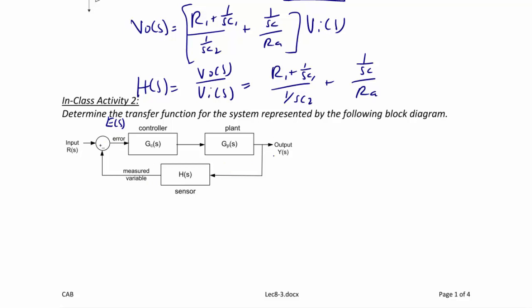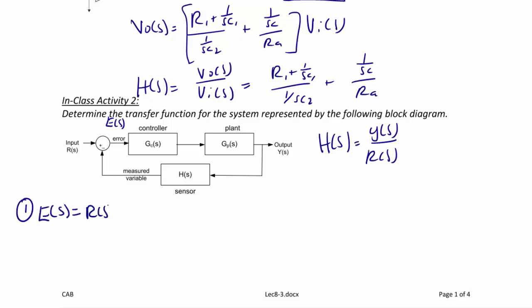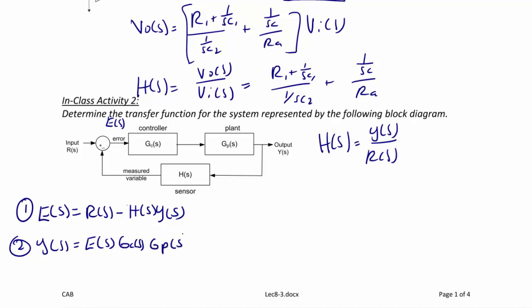So now we're going to create the transfer function for this. Recall that the transfer function is the ratio of the output Y(S) over the input R(S). The first equation is E(S) equals R(S) minus H(S) Y(S). The second equation is Y(S) equals E(S) times GC(S) times GP(S).